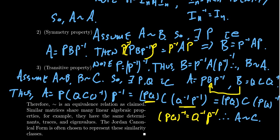Therefore, we see that A is related to C. This shows that the similarity condition is transitive. This shows us that we have an equivalence relationship because it's reflexive, symmetric, and transitive.